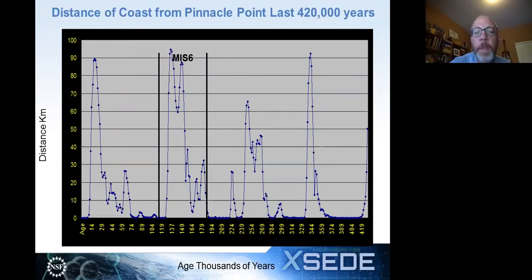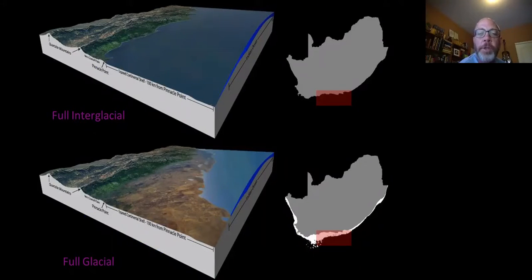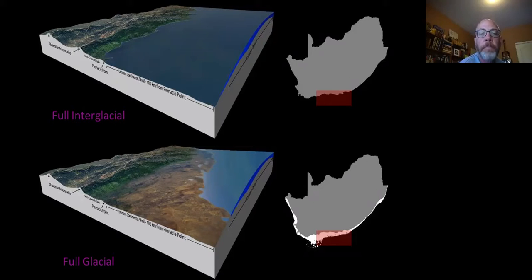Trying to model where the coast is simple compared to modeling climate change. An informal picture shows what the South African coast would look like during a full interglacial versus a full glacial — essentially during a glacial, we add a landmass the size of Ireland to the South African coast.